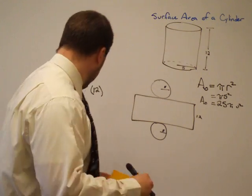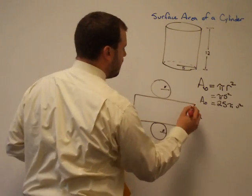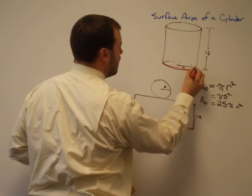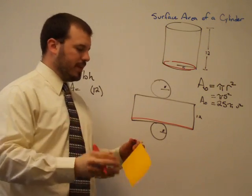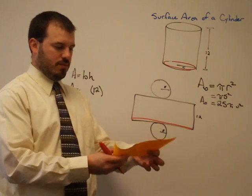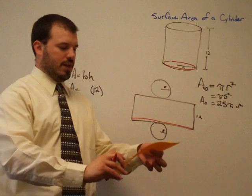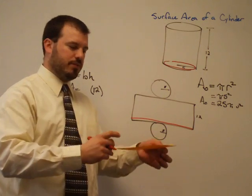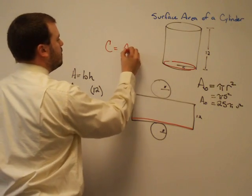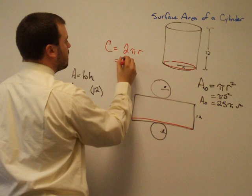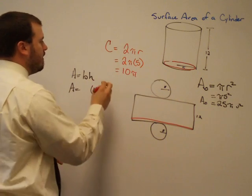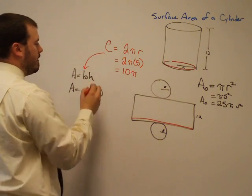The base, this length right here, is the same length as that on the original picture. And what that is, is it's the circumference of the base. The distance here is the same as the circumference of the base, the circumference of the circle. And since you find circumference by doing 2 pi r, our circumference is 2 pi times 5, or 10 pi. And that is the same as that base.